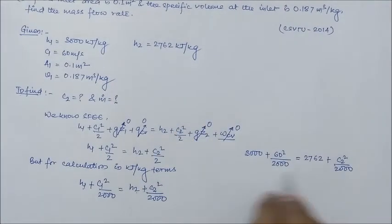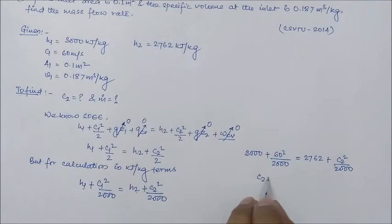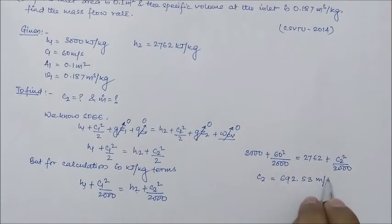I have explained this in my previous video which can be seen here. So, okay. Again, moving further, we have this C2. Everything is known, we can calculate C2 as 692.53 meter per second. This is your answer.